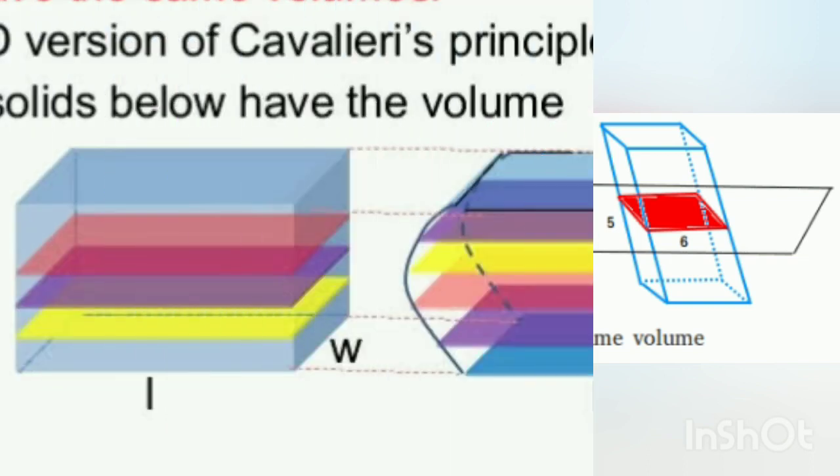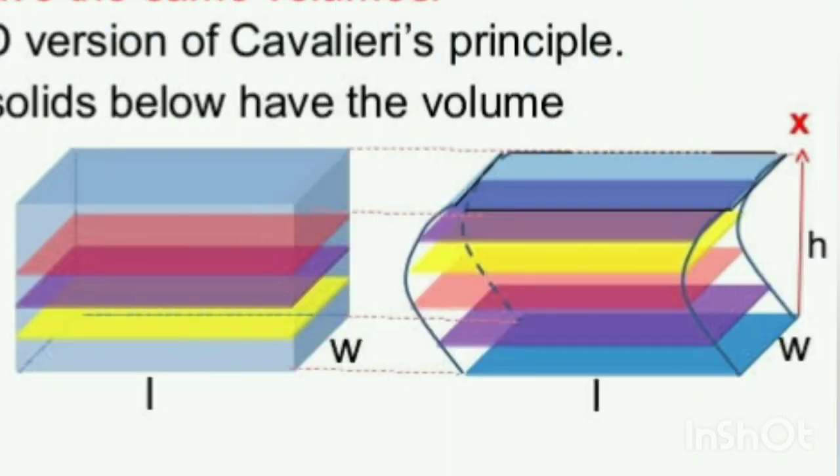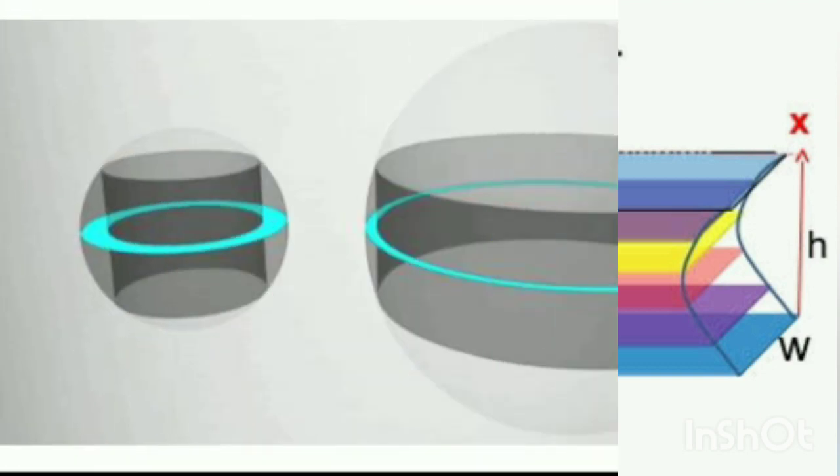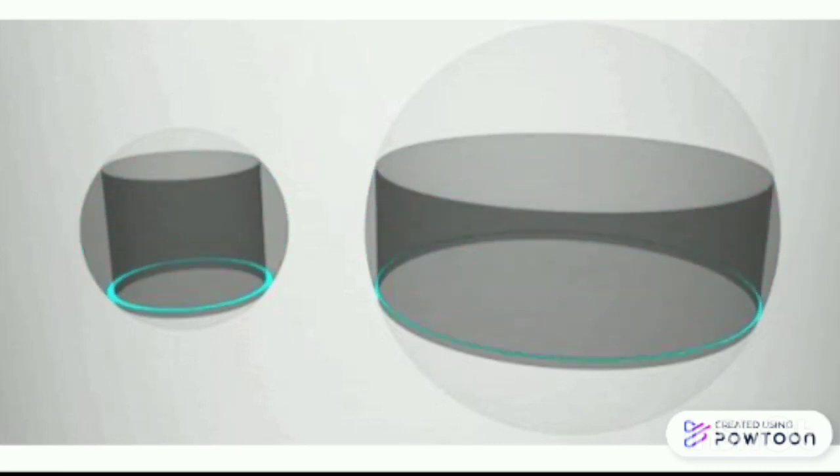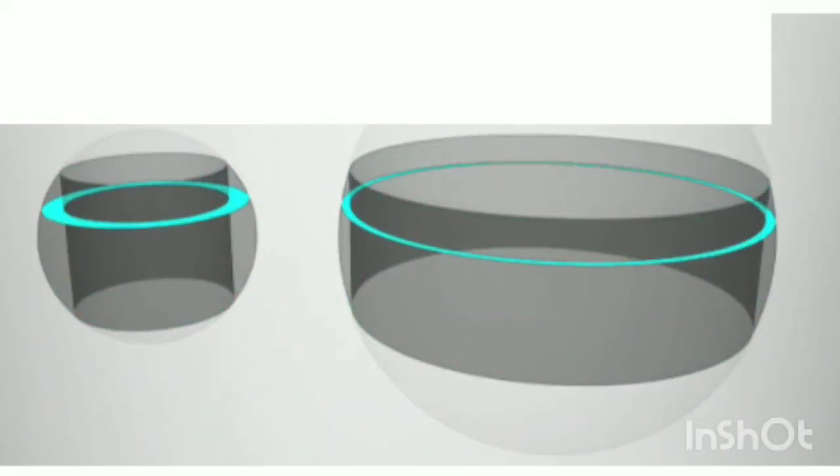In simple terms, it states that for any two solids sandwiched between parallel planes, if any other parallel plane intersects both in regions of equal area, no matter where it's taken from, then the solids have the same volume.